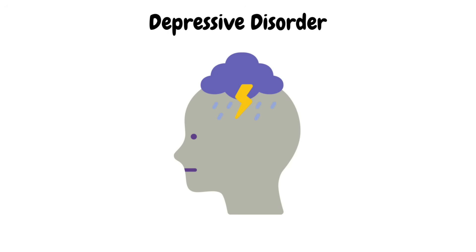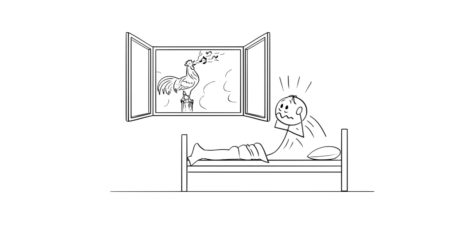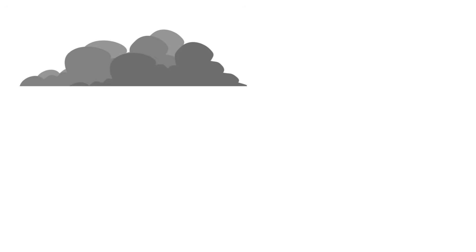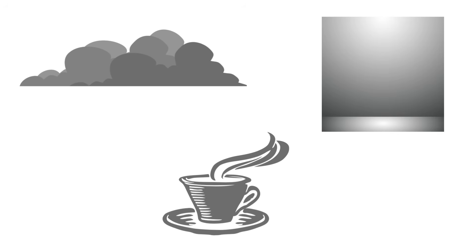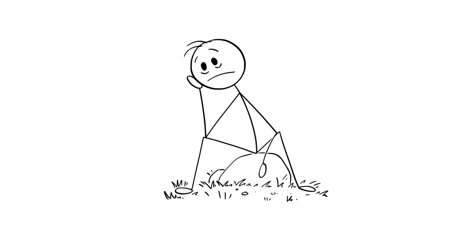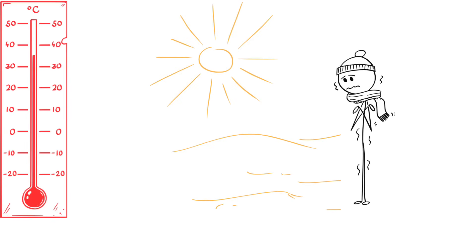Depressive disorder. Imagine waking up every day in a world that looks like someone turned the saturation all the way down. Gray skies, gray walls. Even your morning coffee feels gray. That's depression. It's not just feeling sad after a bad day or two. It's like being stuck in a loop of emotional winter, no matter how sunny it is outside.